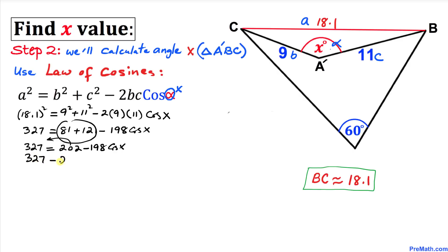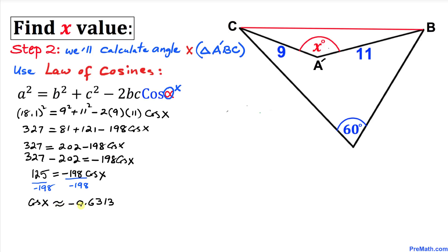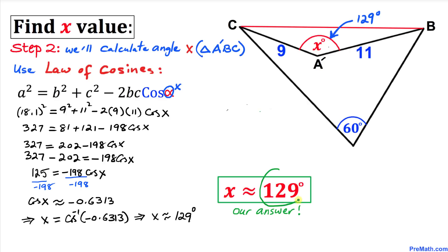Moving 202 to the other side: 327 − 202 = −198·cos(x), so 125 = −198·cos(x). Dividing both sides by −198 to isolate cos(x), we get cos(x) ≈ −0.6313. Taking the inverse cosine, x ≈ 129 degrees. So 129° is our final answer.